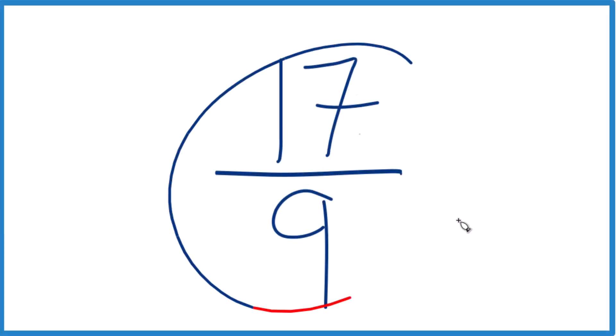Let's simplify the fraction 17 ninths, and then we'll also write it as a mixed number. So to simplify this, we want to find a number